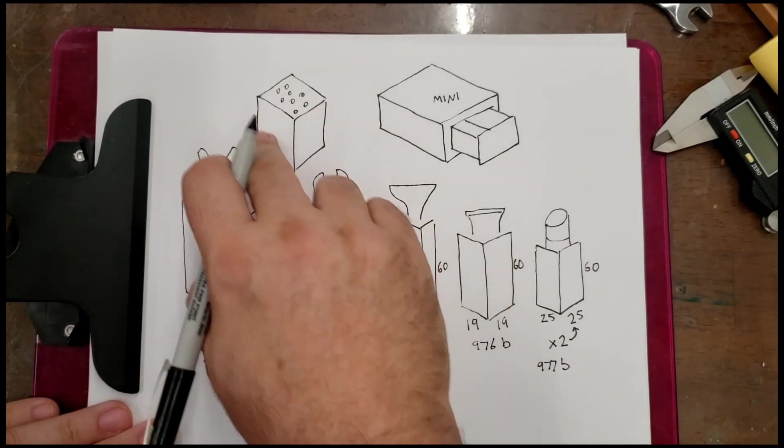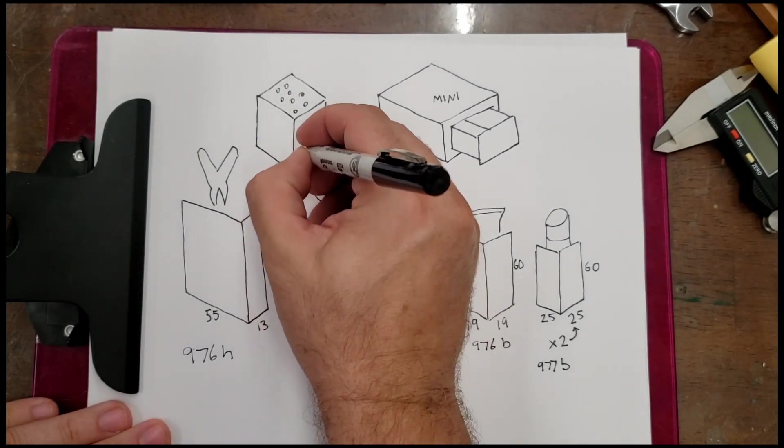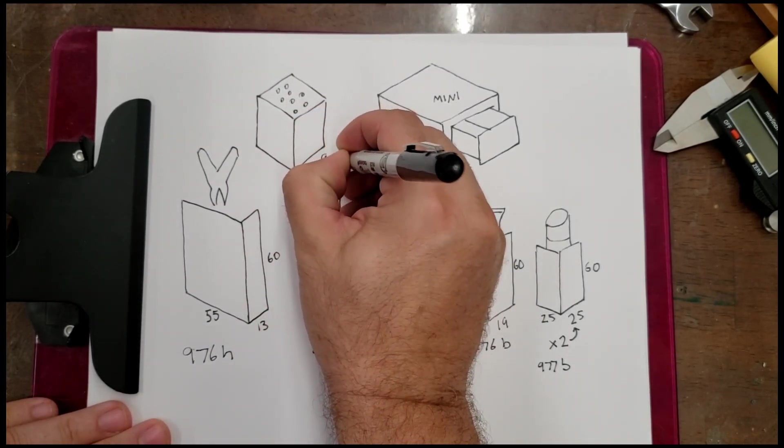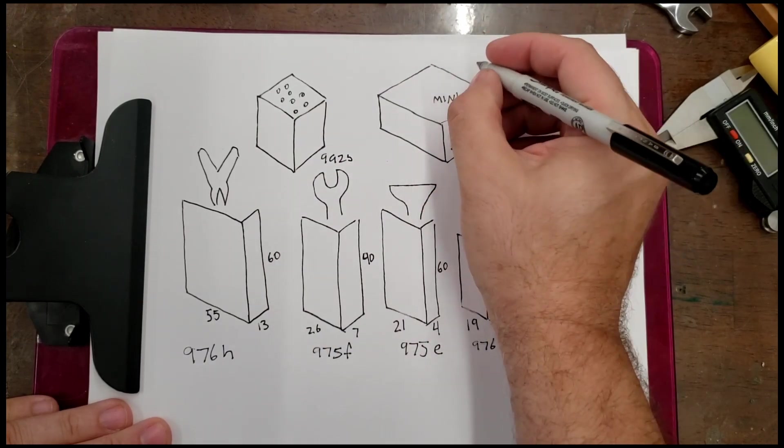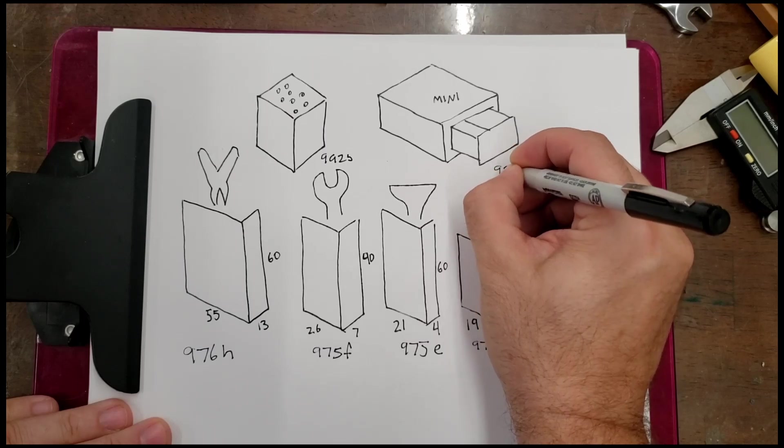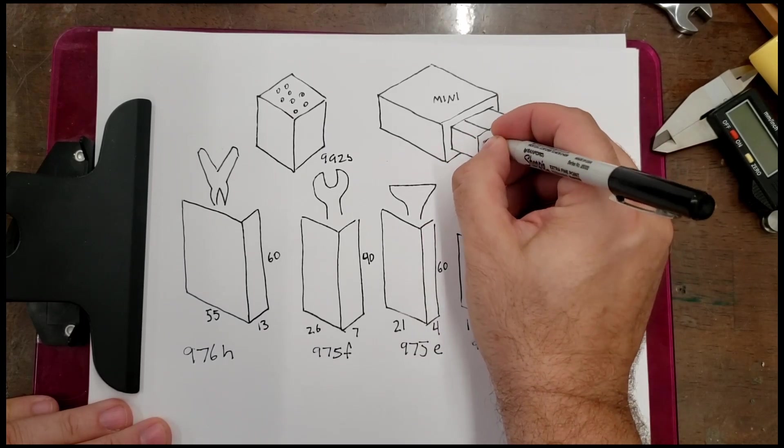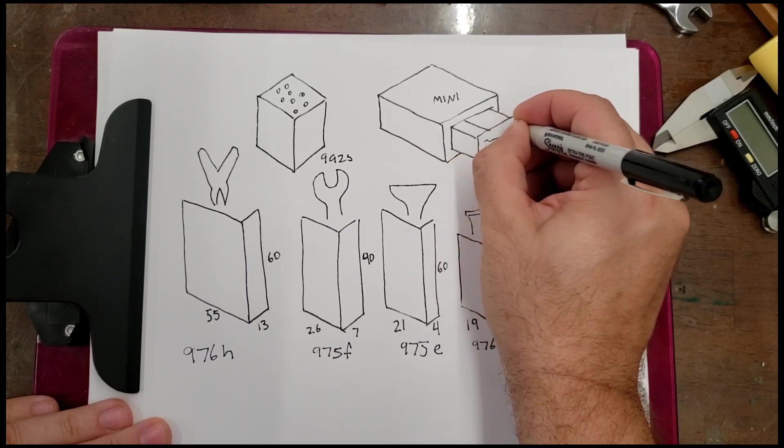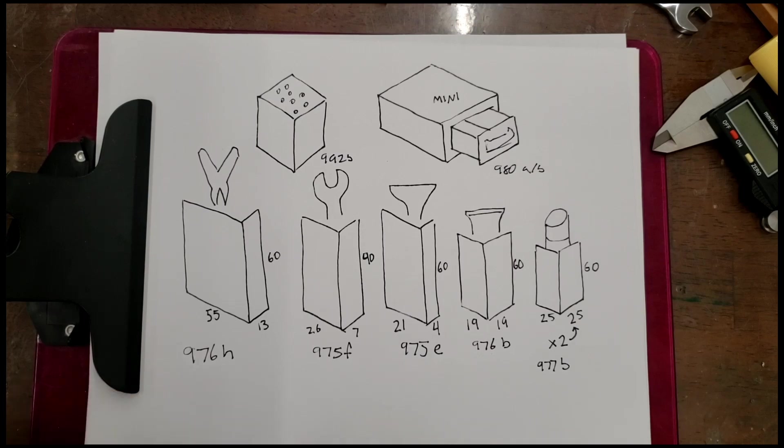And then the glue stick here is also going to be, no, it's going to be 977B because we need it just a little bit bigger to hold that glue stick in there. And then we're going to need the small holder with all of the holes in it. That's 992B. That B gives us the double wide. And then we need a mini drawer. And so that is going to be 980. And we're going to need both A and B as well as a knob for that, which is a separate STL.